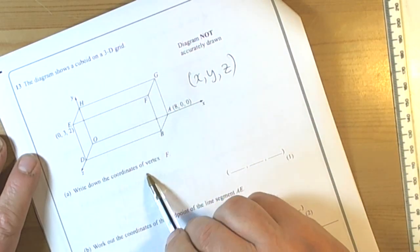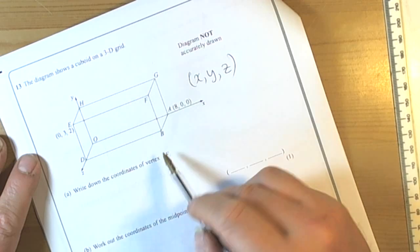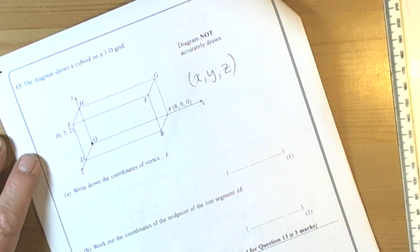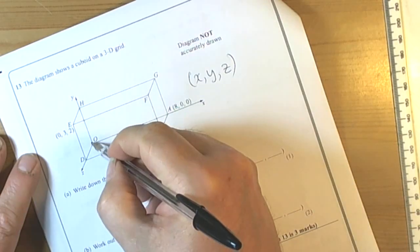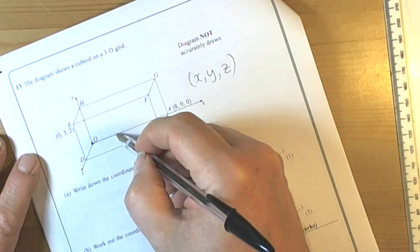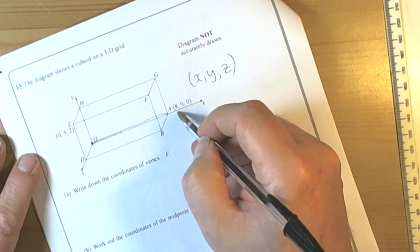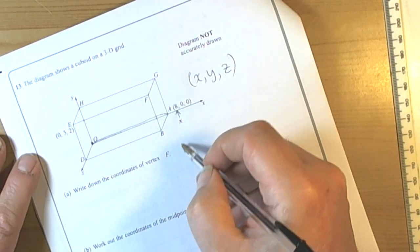So what do they want? They want to write down the coordinates of the vertex F. So it's a journey to get to F and we always start at the origin, it's the quickest way of getting there. So let's have a look, we go on the outside of the cuboid here to there, so that has an X coordinate of 8.